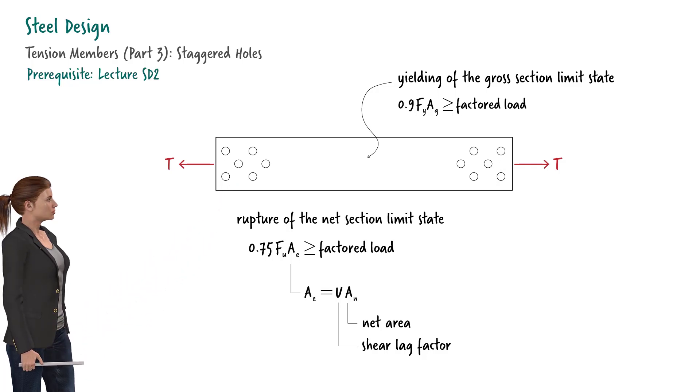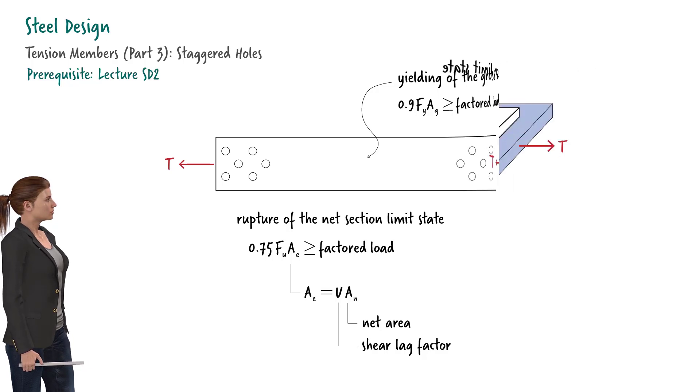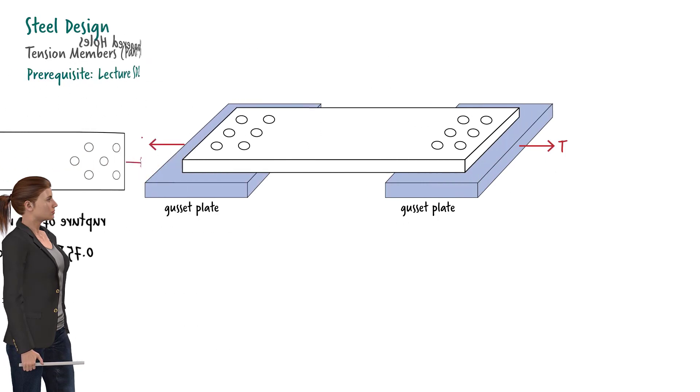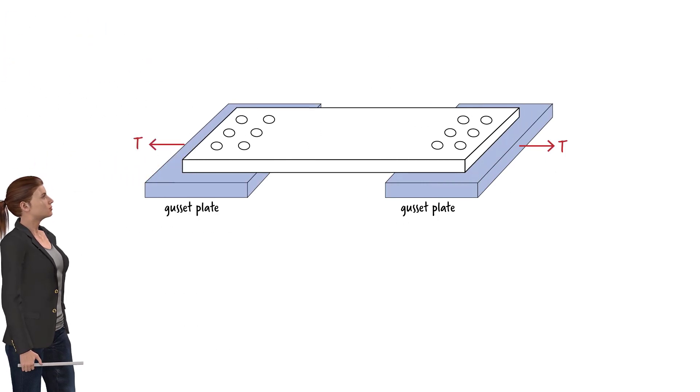This lecture focuses on determining the net area due to staggered holes in the rupture strength equation. When the bolt holes are not staggered, when they are placed along straight lines, for rupture of the net section, failure occurs along the straight line that passes through the holes closest to the center of the member.